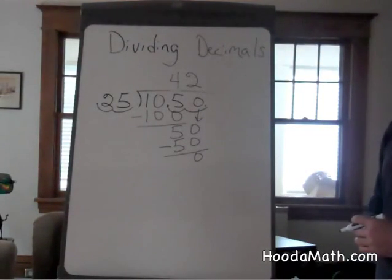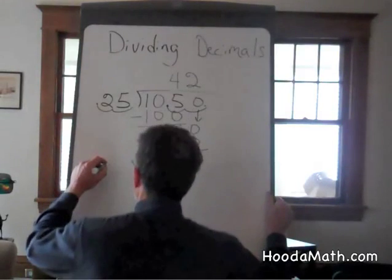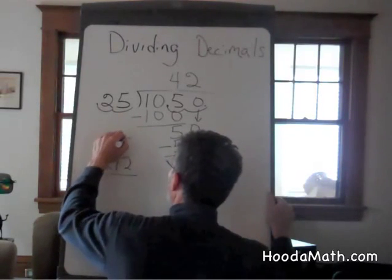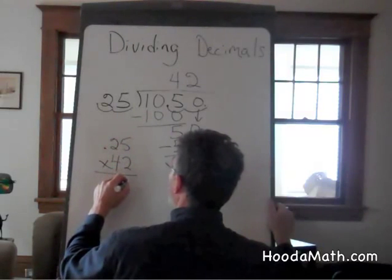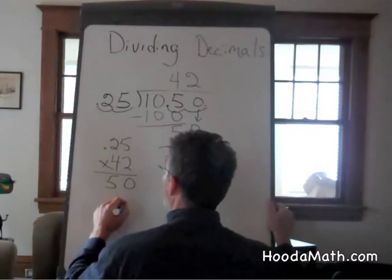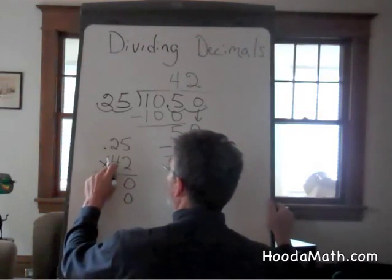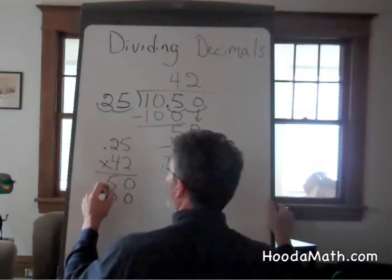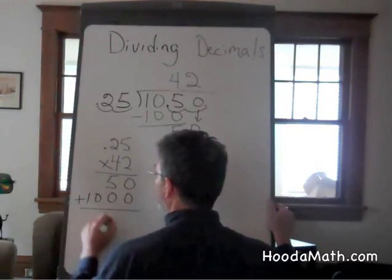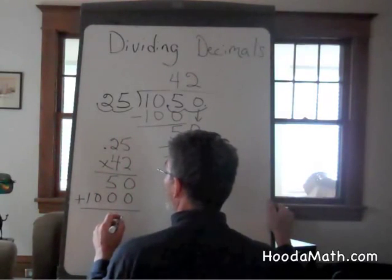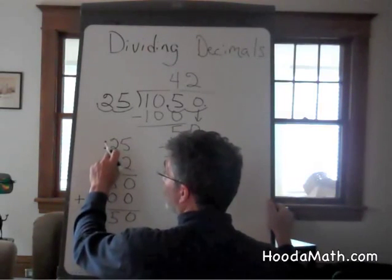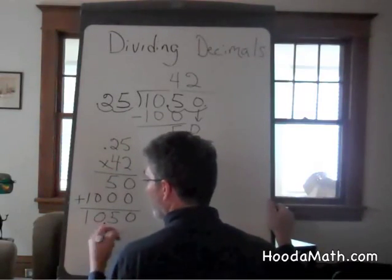To check your answer, multiply. 42 times the original 25 hundredths. 2 times 5 is 10, carry the 1. 2 times 2 is 4 and 1 is 5. You can put a placeholder 0 here. 4 times 5 is 20, carry the 2. 4 times 2 is 8 and 2 is 10. Add to find your original dividend. And because there are two places in the decimal, there are two places in the product. That is our check.